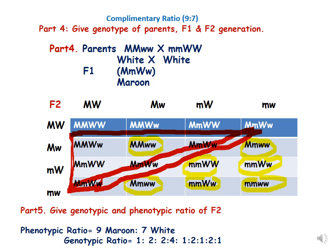In F2, after selfing of F1 parents, we construct the checkerboard. All genotypes which have both capital M and capital W give the maroon phenotype. All those genotypes which have either capital M or capital W give white phenotype. This produces the 9:7 ratio — 9 maroon and 7 white. The genotypic ratio of F2 is 1:2:2:4:1:2:1:2:1.